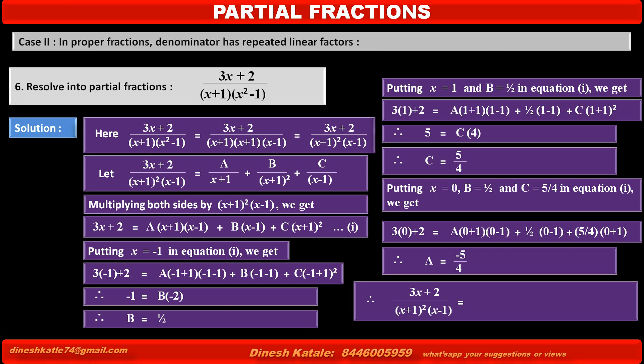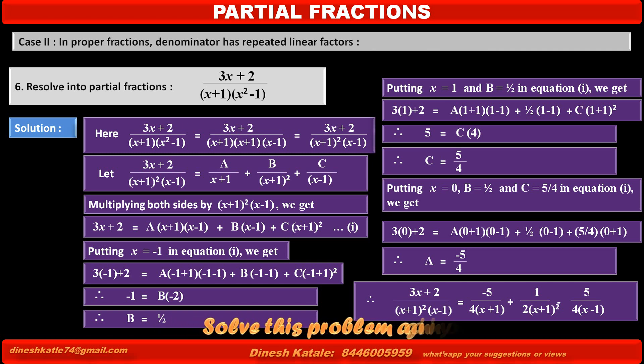Therefore the given fraction (3x + 2) upon (x + 1)² into (x - 1) equals: replacing A by -5/4, the first term becomes -5/4(x + 1); replacing B by 1/2, the second term becomes 1/2(x + 1)²; and the third term is (5/4)(x - 1). For better understanding, take a pause here and try to solve this problem again in your notebook.